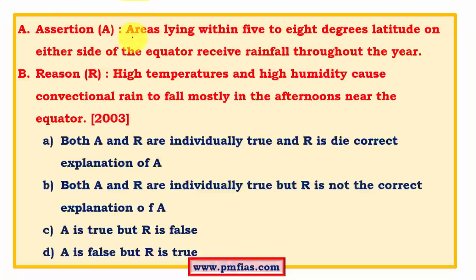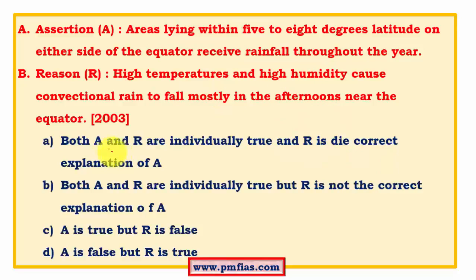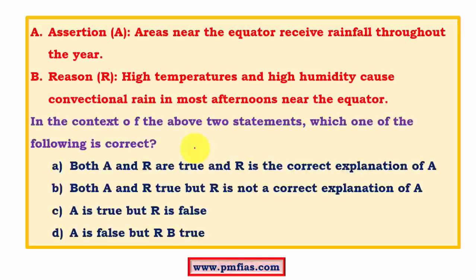Let's look at some multiple choice questions. 'Areas lying within 5 to 8 degrees latitude on either side of the equator receive rainfall throughout the year' — this is correct based on what we've studied. 'High temperatures and high humidity cause convection rainfall to fall mostly in the afternoons near the equator' — also correct. The ITCZ causes upliftment of trade winds which converge, leading to cloud formation and intense afternoon thunderstorms. Both high temperature and high humidity are necessary for this upliftment and moisture.